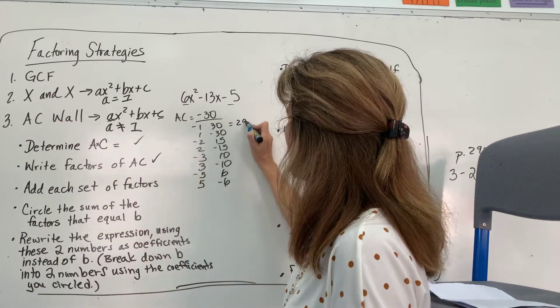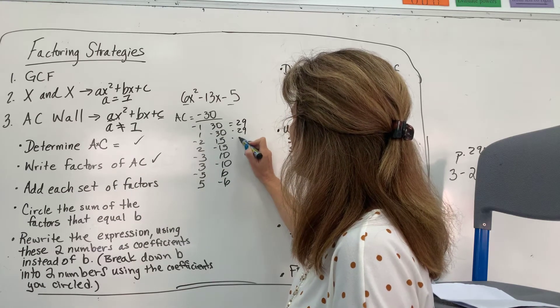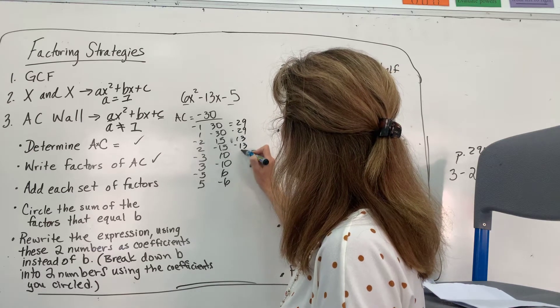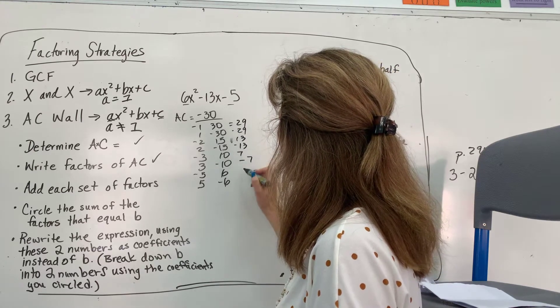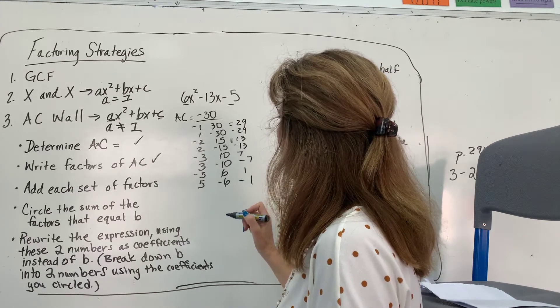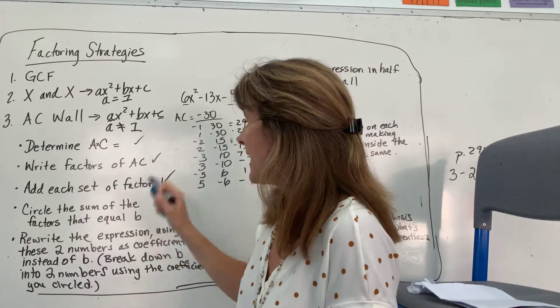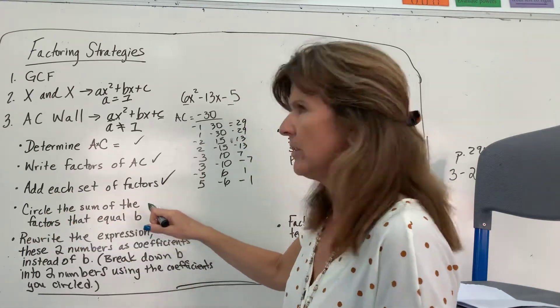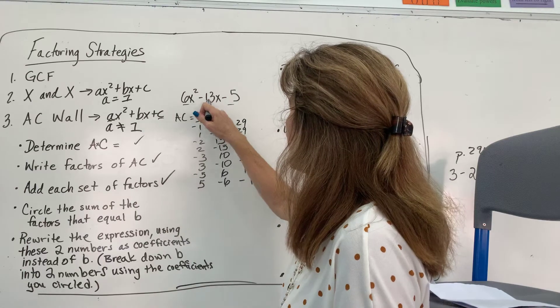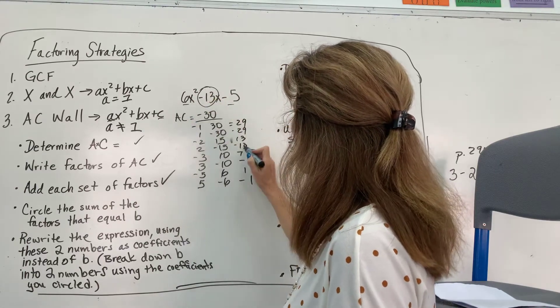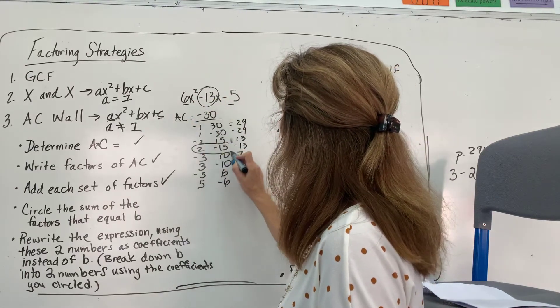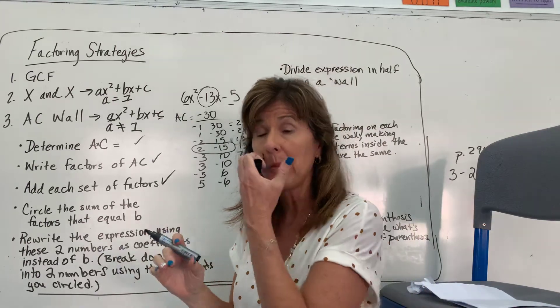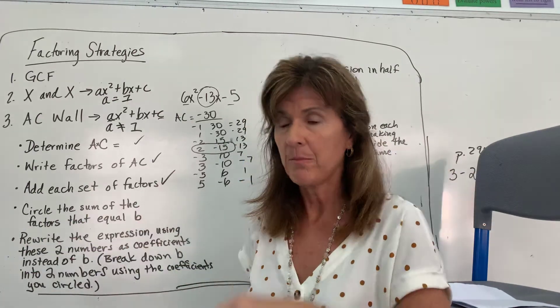Okay. 29, negative 29. 13, negative 13, 7, negative 7, 1, negative 1. Okay. Did that. Circle the sum of the factors that equal B. Oh, what's B? B is negative 13. So, here it is negative 13. So, I'm going to circle 2 and negative 15. Those are going to be my key numbers for setting up this problem.